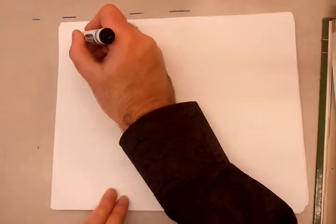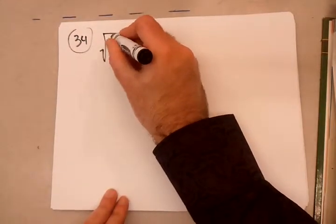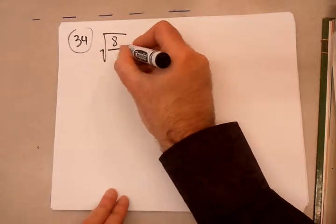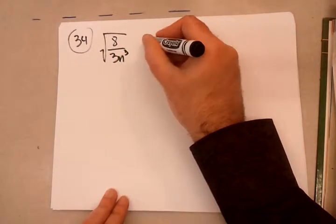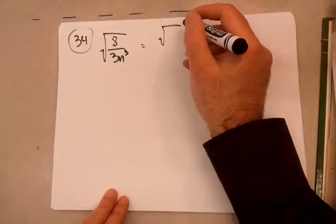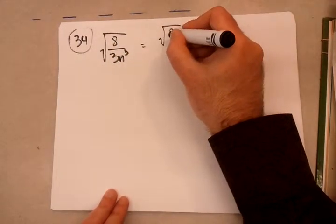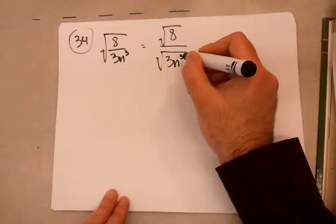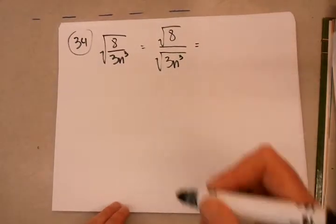And, I'm also going to do number 34. Sorry about the outside noise. We have square root of 8 divided by 3 n to the third power. Just like before, break up the fraction because we don't like fractions underneath the root into two separate square roots. One in the numerator, one in the denominator.